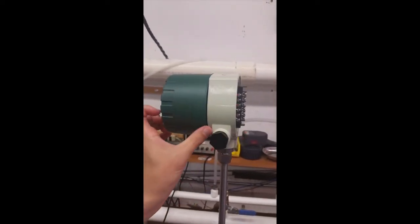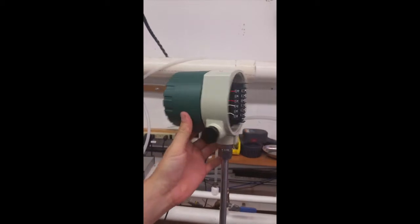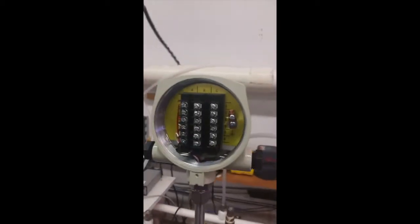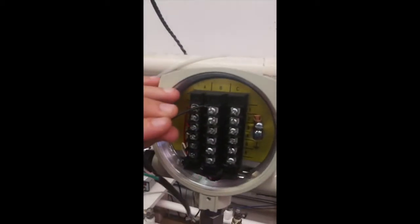So we're going to show you how to connect the externally powered 4 to 20 milliamp output on this AC power Sage Prime.